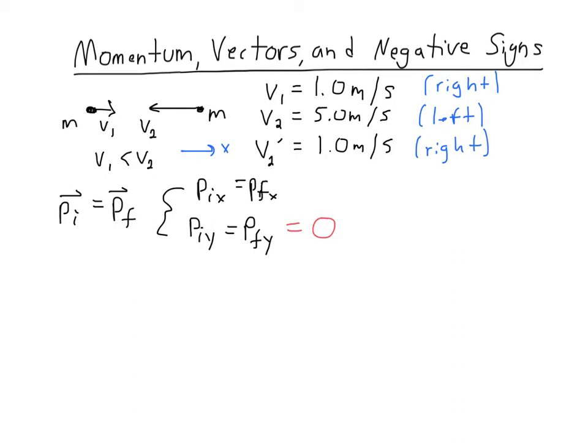Okay, so let's write out the initial in the x direction. So the initial momentum in the x direction is the sum of P1 in the x direction and P2 in the x direction.